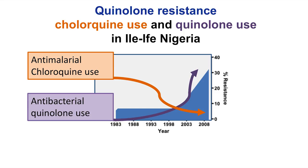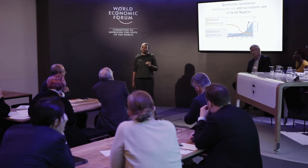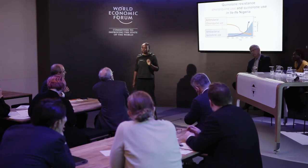We now know from a research study of ours that resistant bacteria were on the rise in Nigeria — shown in blue — temporarily coincident with antibacterial quinolone use. So it was not chloroquine driving the selection. But we know this only from a research study designed to test questions about bacterial evolution. It's just by chance that we happened to have that data. We cannot depend on chance research studies to inform health policy.